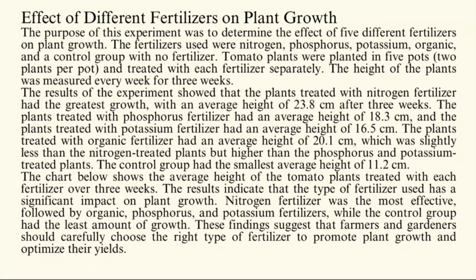Effect of different fertilizers on plant growth. The purpose of this experiment was to determine the effect of five different fertilizers on plant growth. The fertilizers used were nitrogen, phosphorus, potassium, organic, and a control group with no fertilizer. Tomato plants were planted in five pots, two plants per pot, and treated with each fertilizer separately. The height of the plants was measured every week for three weeks.